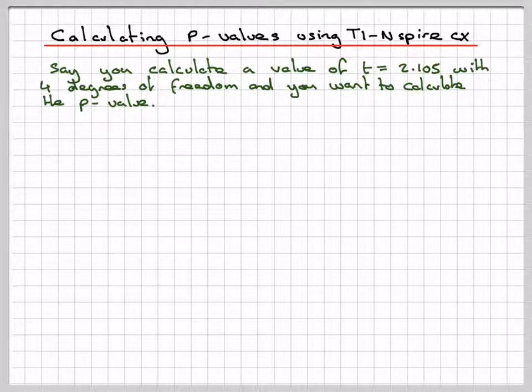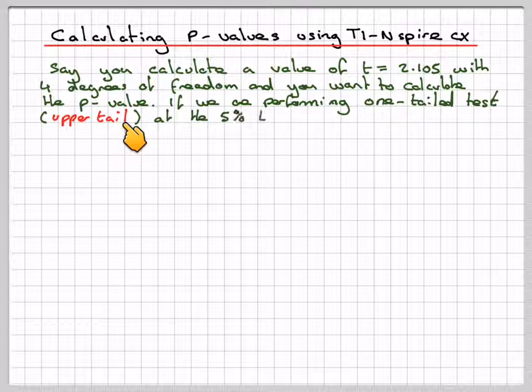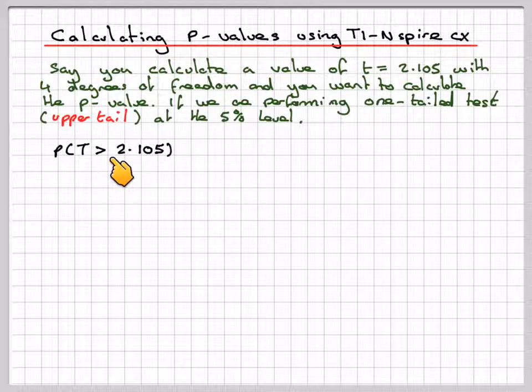First, you must know what type of test you're doing. If we're performing a one-tailed test looking at the upper tail at the 5% level, then you need to calculate the probability that t is greater than 2.105 with 4 degrees of freedom.